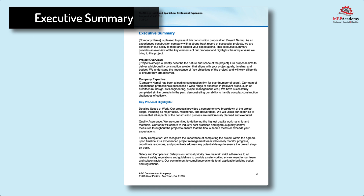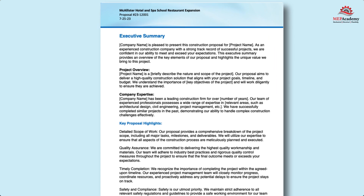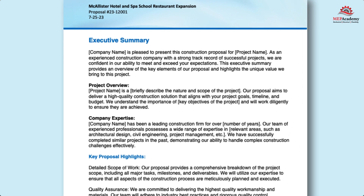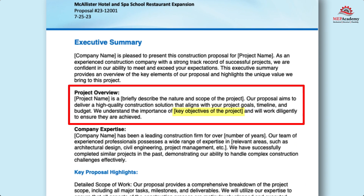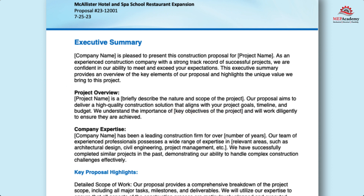The Executive Summary gives an overview of the project with a brief description of the scope of work. In a separate section, we'll provide the full scope of work. Here, identify the key objectives of the project as expressed by the RFP or owner — this could be timely completion, quality and safety, cost management, client satisfaction, sustainability and environmental considerations, innovations, or long-term durability and maintainability. This communicates to the proposal recipient that you heard their concerns.